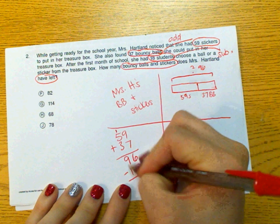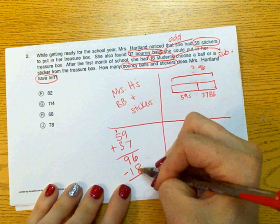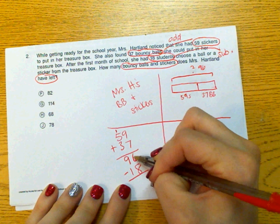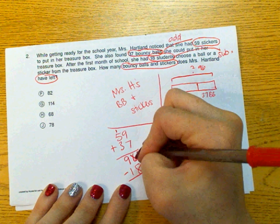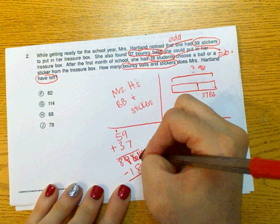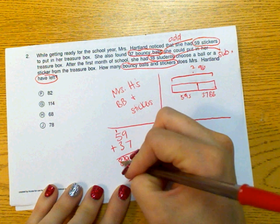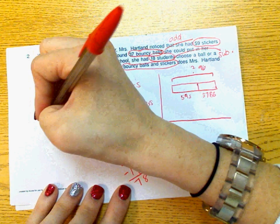Now a lot of students forget to regroup. They would do 8 minus 6, but that's not what they want to do. We're doing 8 taking away from the 6, which we cannot do. We're going to cross out the 6, make it a 16. Cross out the 9, make it an 8. 16 minus 8 is 8. 8 minus 1 is 7. So our answer is 78.